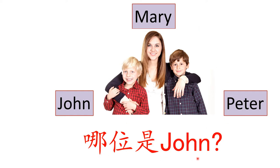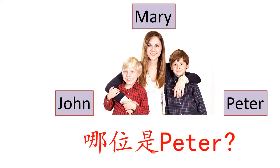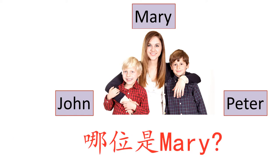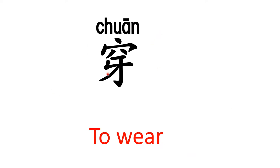To answer these questions, we tell what the person wears. 穿红衣服的那位是John — the one wearing the red shirt is John. 哪位是Peter? 穿蓝衣服的那位是Peter — the one wearing the blue shirt is Peter. 哪位是Mary? 穿白衣服的那位是Mary. Here, 穿 means 'to wear': 穿衣服, 穿鞋子, 穿裤子.